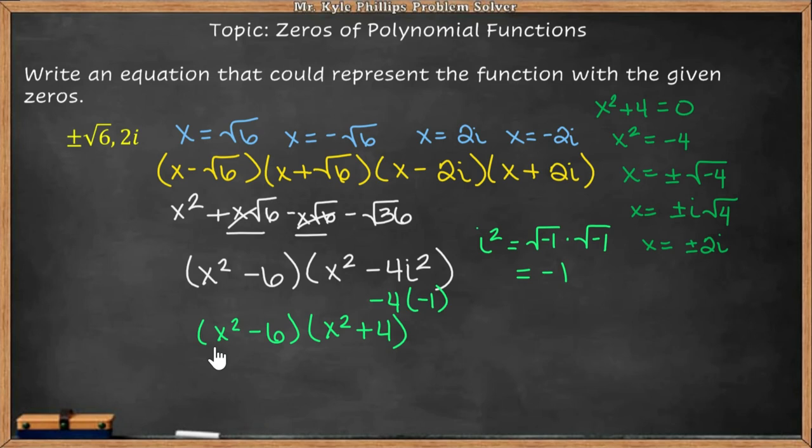Now I can multiply these together. x squared times x squared is going to give me x to the fourth. x squared times four is going to give me four x squared. Negative six times x squared is negative six x squared. Negative six and positive four is going to give me negative 24. So I'll combine my like terms here. And I'll write out my polynomial. The function, which will give me these roots, is going to be x to the fourth minus two x squared minus 24. And that's it.